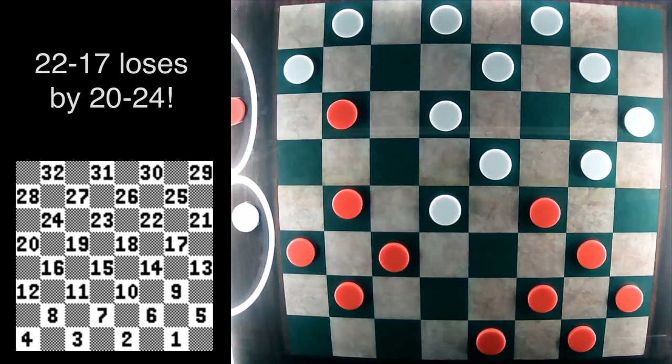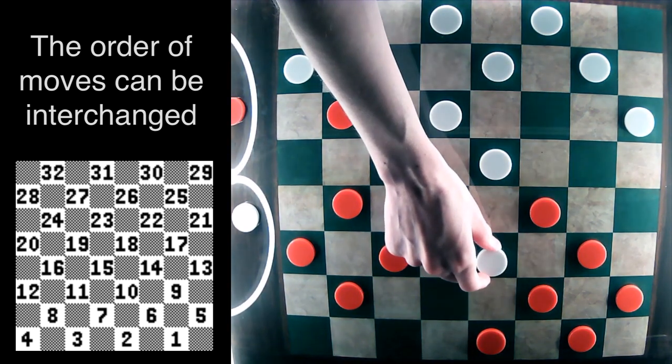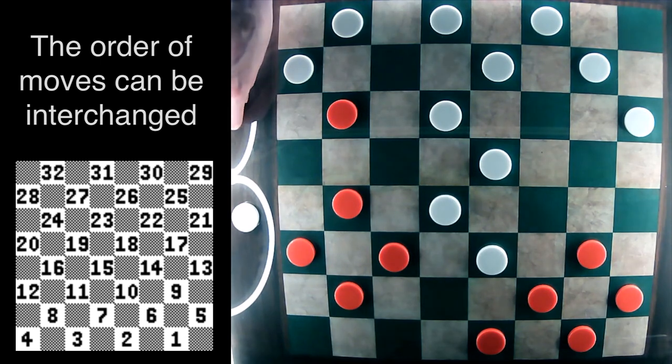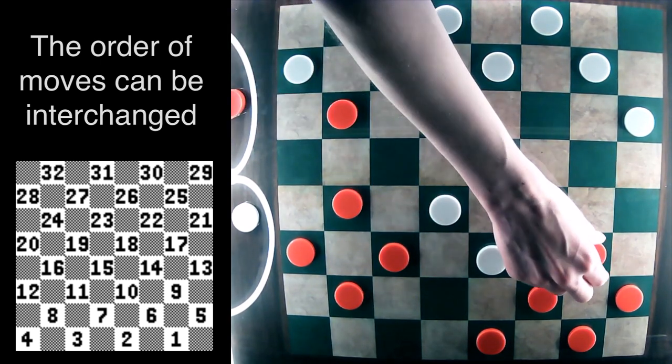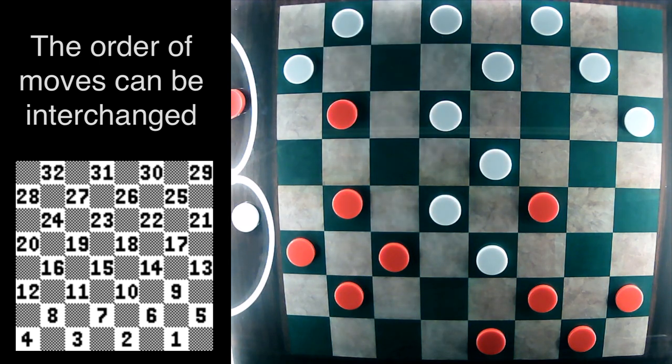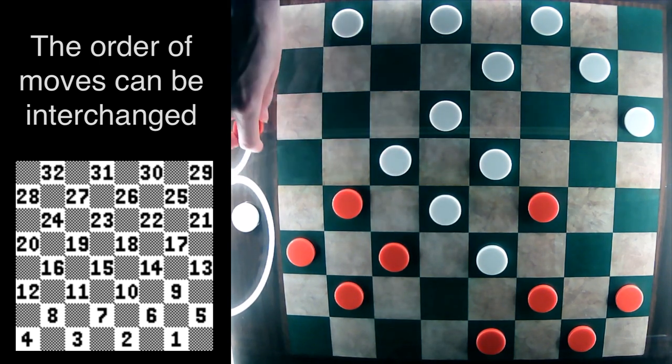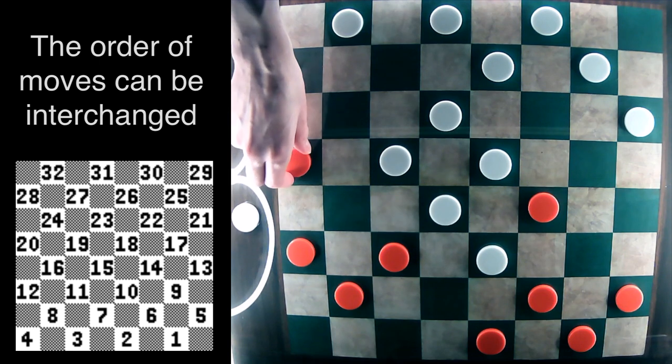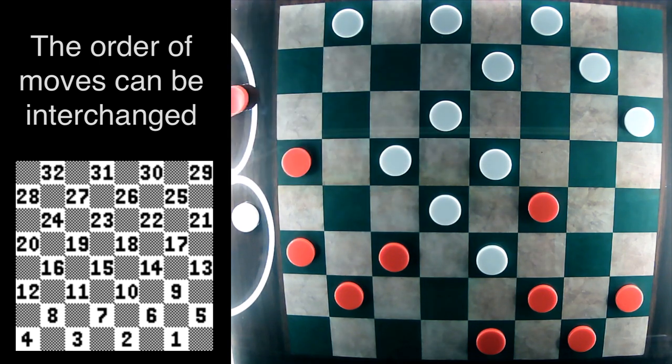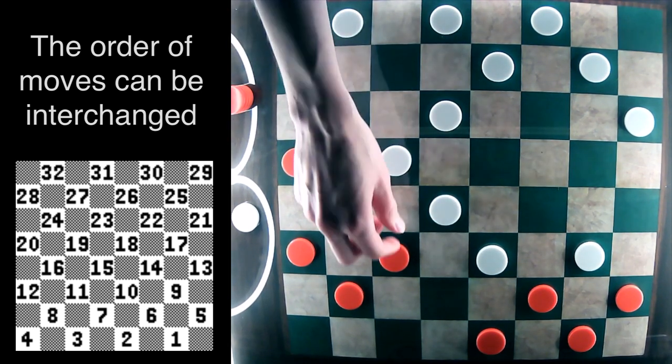after 20-24. So let's play this out. White can jump 17-10 first. And now 9-14 attacking this elbow. White is going to jump 28-19. And then red has this waiting move with 16-20. White must jump 18-19. And now we have the broken elbow.